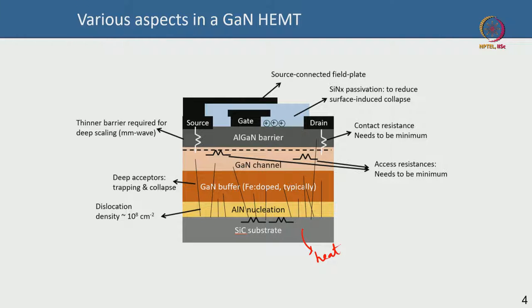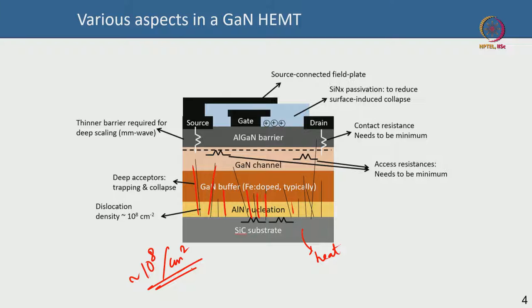GaN material quality on SiC is excellent and thermal conductivity of the substrate is excellent, so SiC is predominantly used in RF applications. There are dislocations — dislocation densities in the range of 10^8 per cm² — which is a fairly high dislocation density, but it is 10 to 100 times lower than if you grew GaN on silicon. With these dislocation densities, people are actually getting excellent device performance.